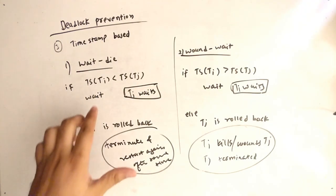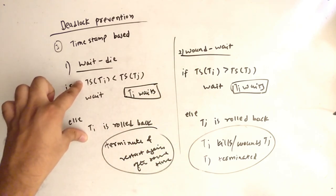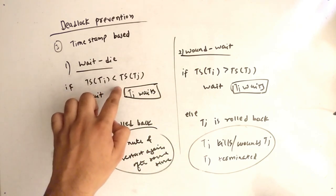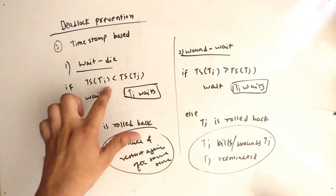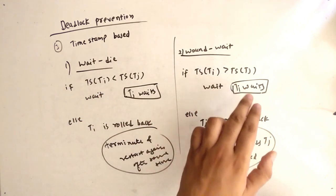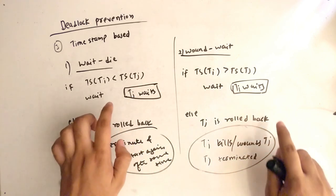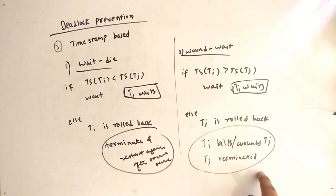Let's take a quick recap. Wait-die and wound-wait, two conditions. So we can have only two conditions in the question. Ti is less than Tj first condition, Ti is greater than Tj second condition. So I have used if and else just for simplicity. So if Ti is less than Tj, wait. But in wound-wait, if Ti is greater than Tj then Ti waits. Important part, you have to note that. Else Ti is rolled back, but else Tj is rolled back. Why Tj rolled back? Because Ti kills Tj or wounds Tj. So Tj terminates.